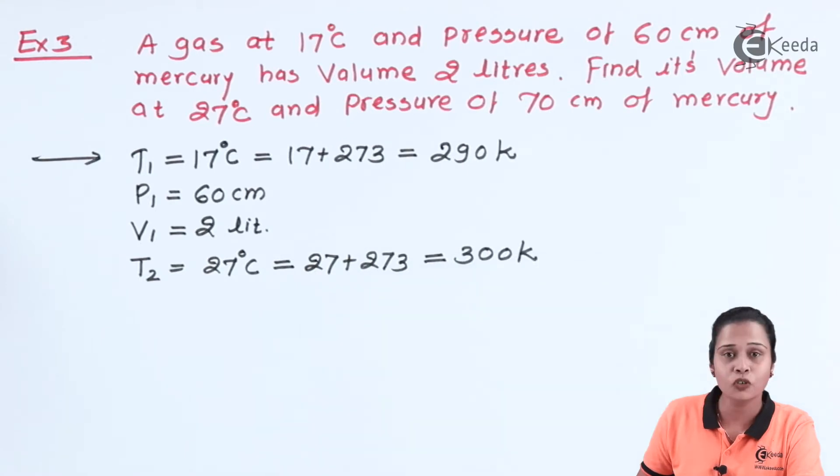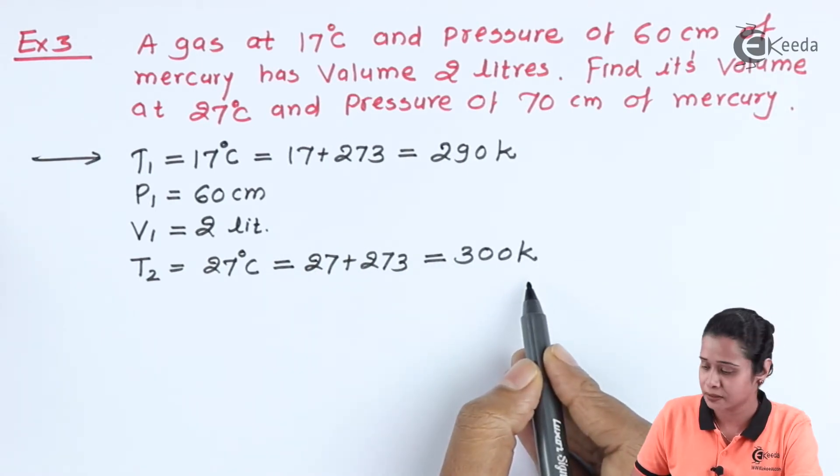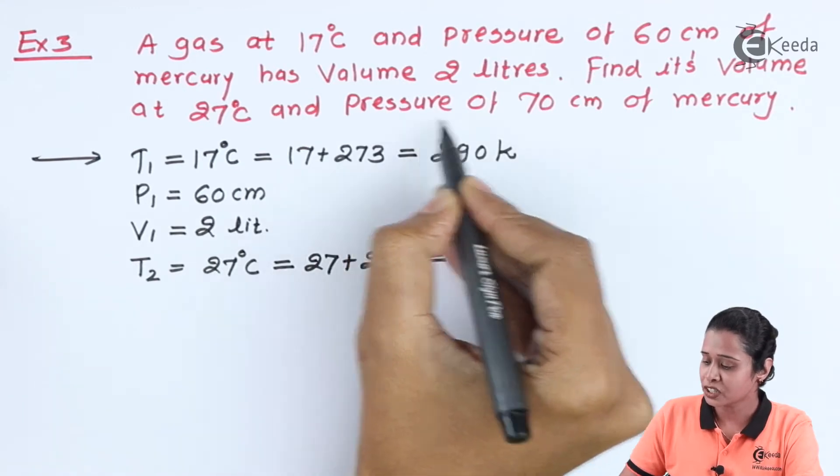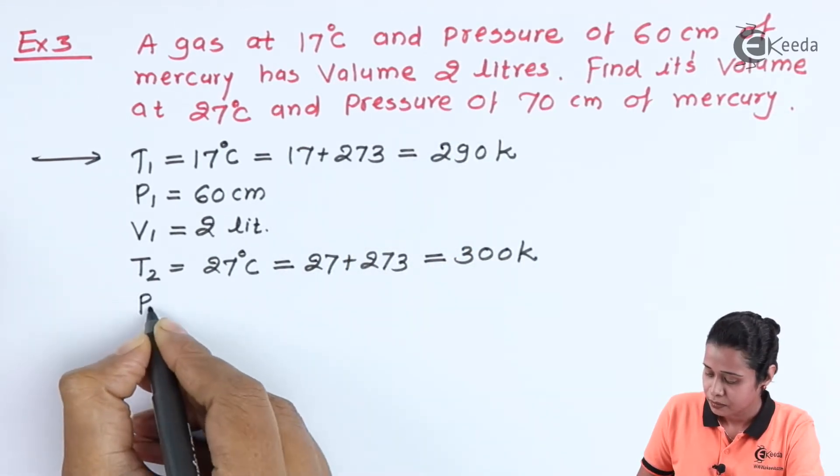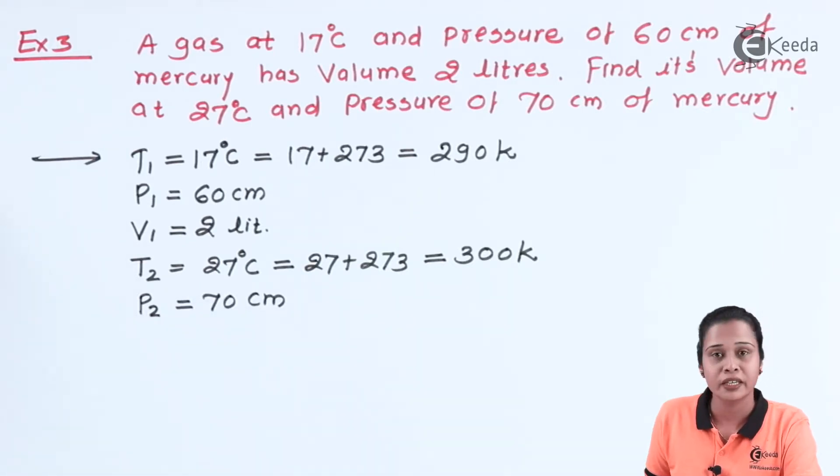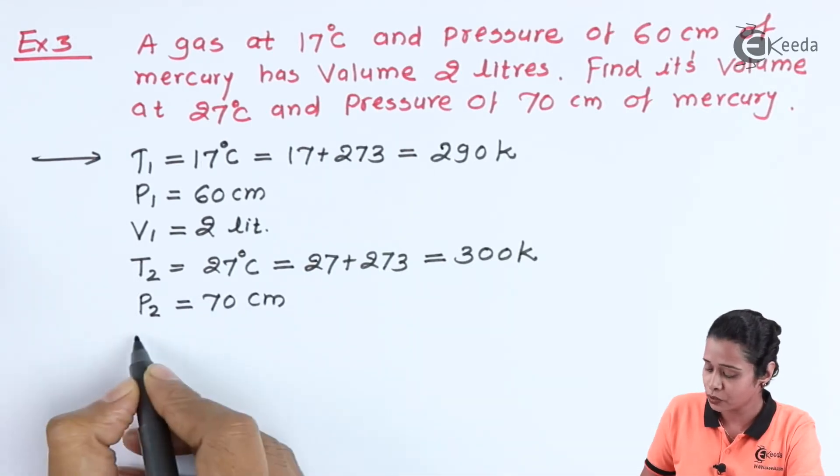T2 value here is 300 Kelvin. Now, the pressure is given, that is 70 cm. And here, our aim is to find out V2 value.